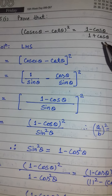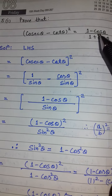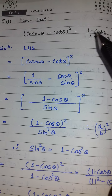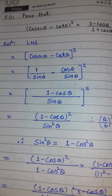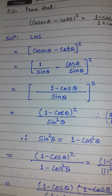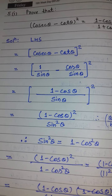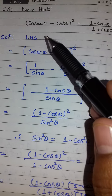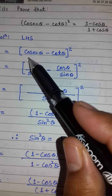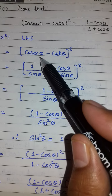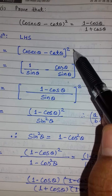For Question 5, we need to prove left hand side equals right hand side. Taking the left hand side: (cosec θ − cot θ) whole square.